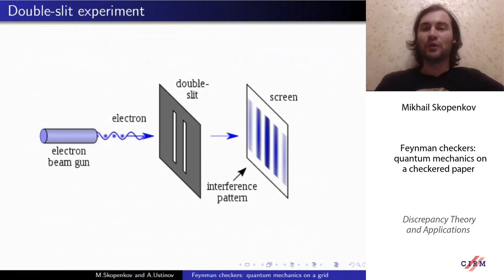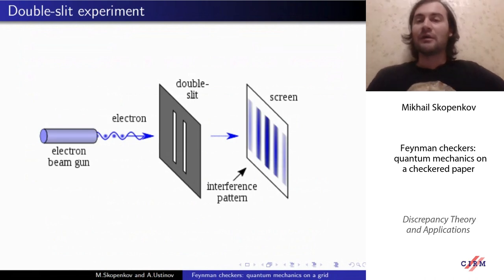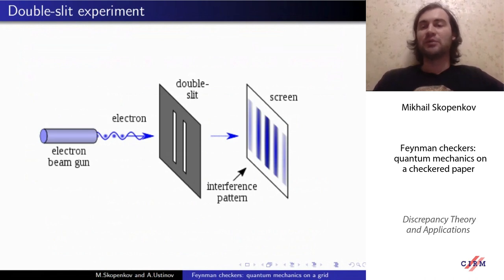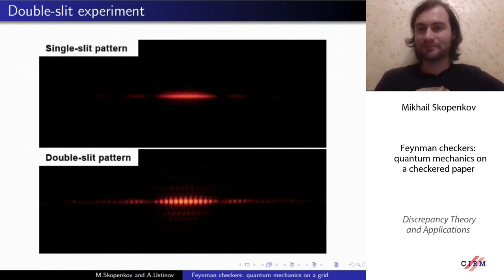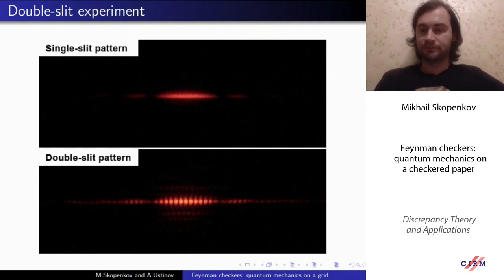The simplest way to explain what the model is about is the classical double slit experiment. In this experiment, an electron beam is directed towards a plate pierced by two parallel slits, and the beam illuminates a screen placed right behind the plate. If a single slit is open, then the beam illuminates a spot on the screen as one could expect — see the figure at the top. You see the realistic experimental pattern in the lower part of the screen.